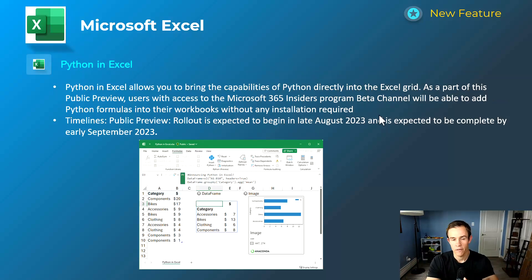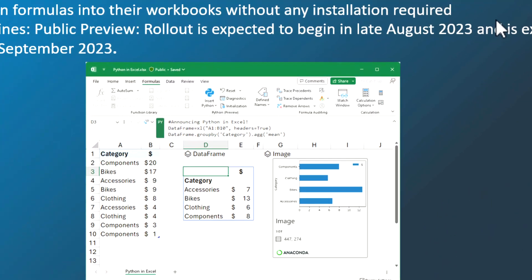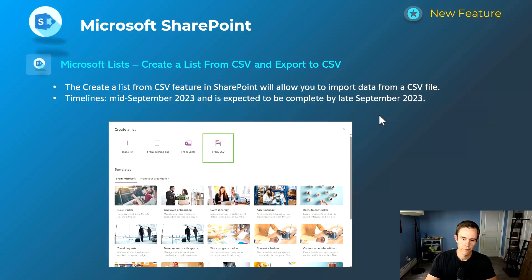Microsoft Excel has an interesting announcement that will excite people well versed in Python — this is a public preview of Python in Excel, which allows you to create formulas and functions that will be directly incorporated within your Excel grid. This is part of the Insiders program beta channel for public preview, and it's expected to begin in late August and be complete by September.